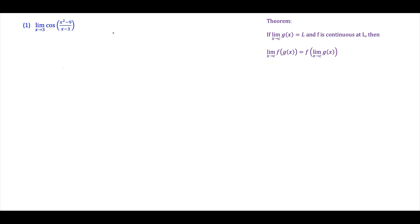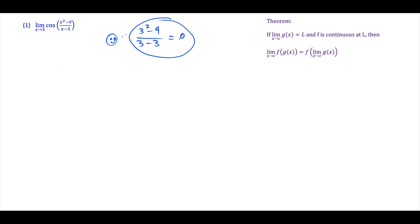For the first example — and for all limits — one of the first things you want to try is just plugging in the x value. Notice it's the limit as x approaches 3. So if we plug in 3, we get 3 squared minus 9 over 3 minus 3 on the inside, which gives us 0 over 0. So cosine of 0/0 is undefined, which means we have a bit more work to do.